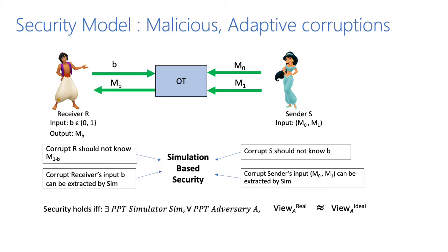We model the security of the protocol by considering a PPT algorithm simulator. The simulator interacts with the real-world adversary algorithm to create an ideal-world adversarial view, given access to the functionality. We say that security holds if the view of the adversary in the real world is indistinguishable from the view in the ideal world, where it interacts with a simulator sim.